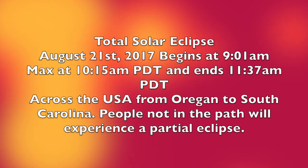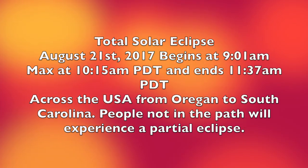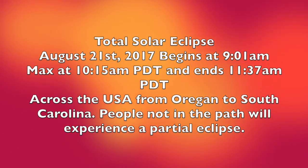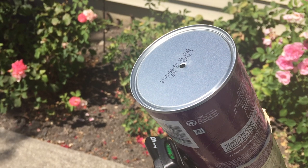So the total solar eclipse begins August 21st, 2017 at 9:01 a.m. Pacific Standard Time, California. Maximum 10:15, and it ends at 11:37 a.m. Pacific Standard Time, all across the United States to South Carolina. And if you're not in that part of the view, then you won't see a total but a partial eclipse.